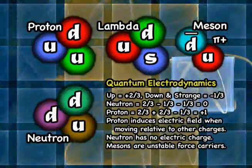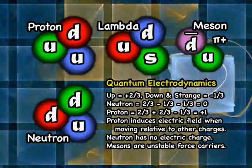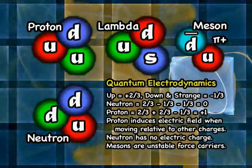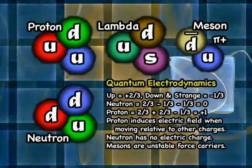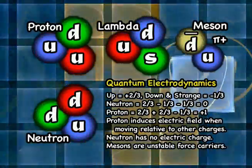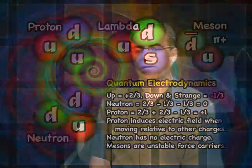Those protons and neutrons can be broken up even further into things called gluons and quarks. Our Earth is constantly being bombarded from outer space by high-energy particles that we call cosmic rays.